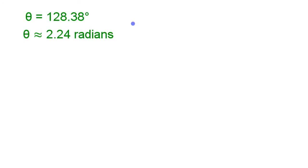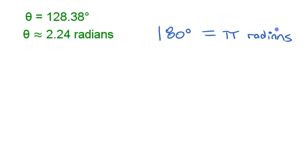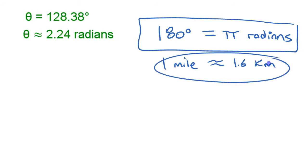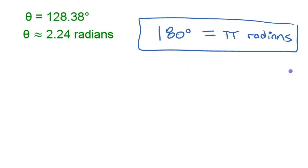How are those equivalent? The key you need to know is that 180 degrees equals pi radians — half a turn is pi radians. Just like any other conversion factor, like knowing one mile is approximately 1.6 kilometers, if you know this conversion factor you can change between degrees and radians.